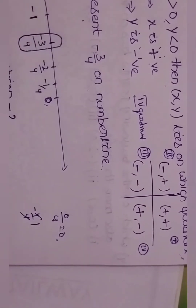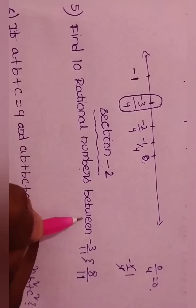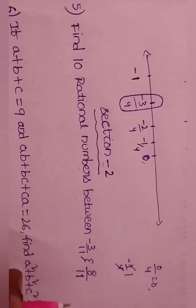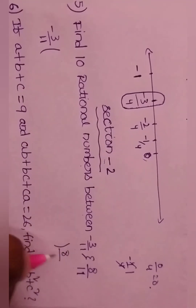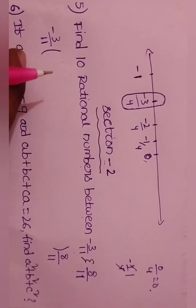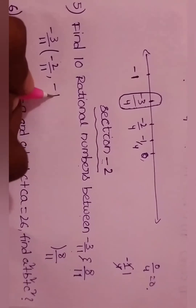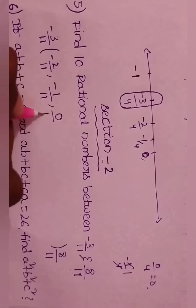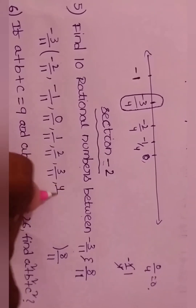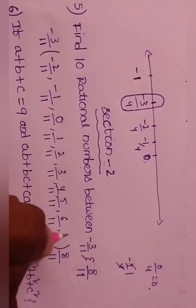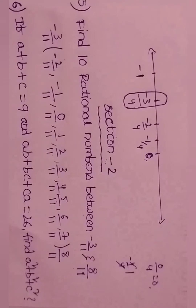Section 2, fifth question: find ten rational numbers between minus 3 by 4 and 8 by 4. Converting to the same denominator gives minus 3 by 11 and 8 by 11. The ten rational numbers are: 1 by 11, 2 by 11, 3 by 11, 4 by 11, 5 by 11, 6 by 11, 7 by 11, and continuing to give ten values.